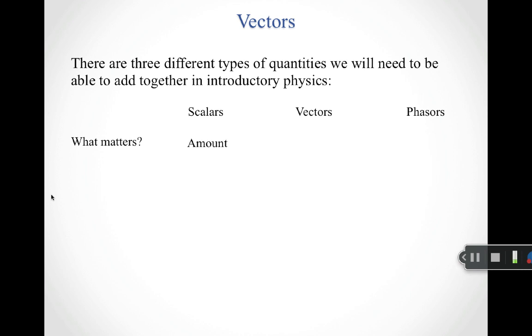For scalars, the only thing that matters is the amount. Scalars are basically numbers. They can be positive, they can be negative, they can be zero, but they're just a number. Vectors on the other hand, you care about the amount, which with a vector we'll tend to call the magnitude and the direction.